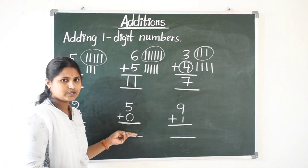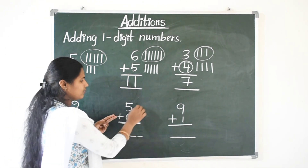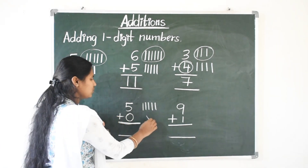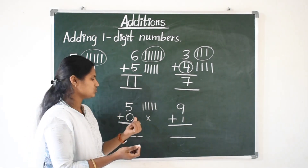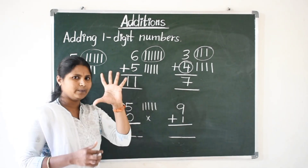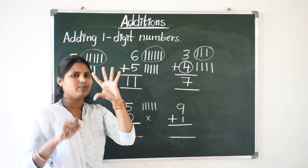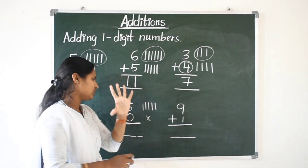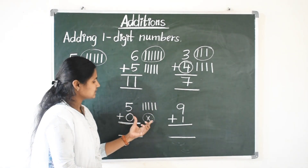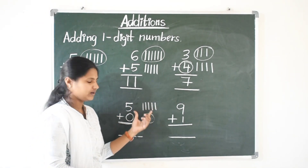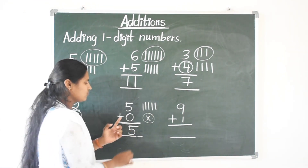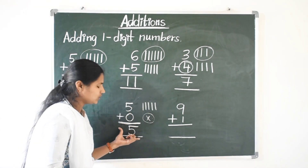Five plus zero. Here five means five lines. Zero means no lines — zero means nothing. So don't draw any lines. Five plus zero gives five only, because no lines are there to add.